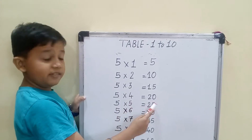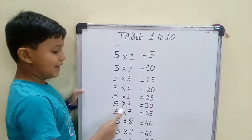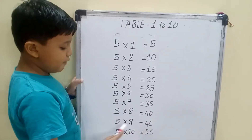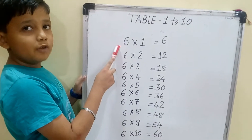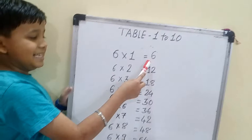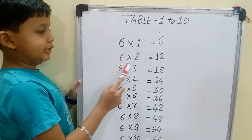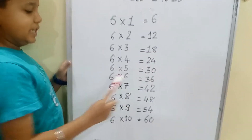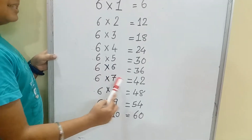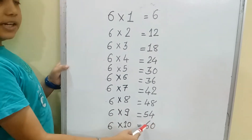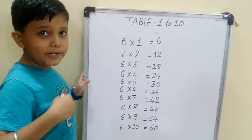Now we are learning the table of 6. 6 one is 6, 6 two is 12, 6 three is 18, 6 four is 24, 6 five is 30, 6 six is 36, 6 seven is 42, 6 eight is 48, 6 nine is 54, 6 ten is 60.